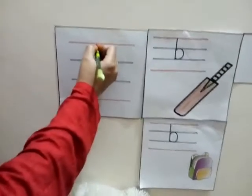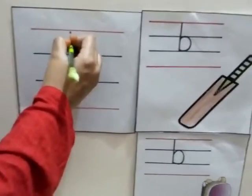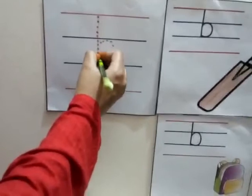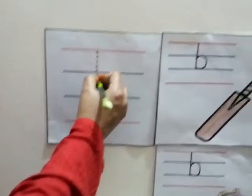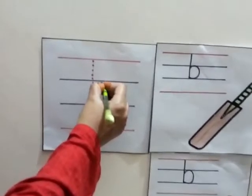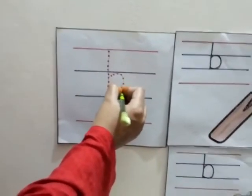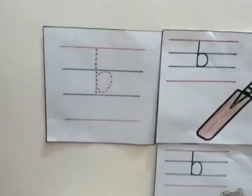Now we are going to write letter B. Start from the top and make a standing line downwards. Then go to the center of the line and add a curve touching the bottom of the line.